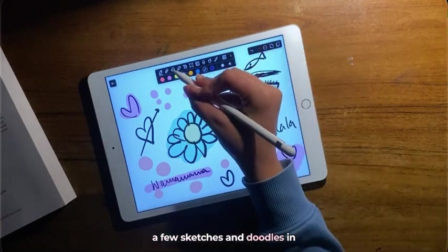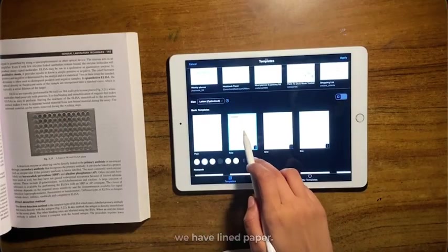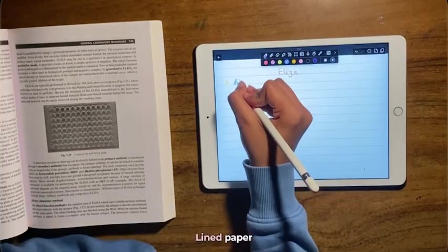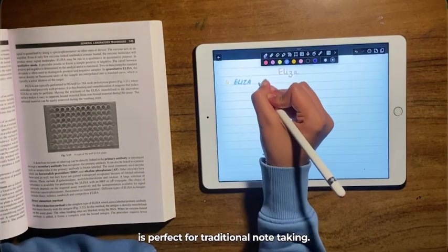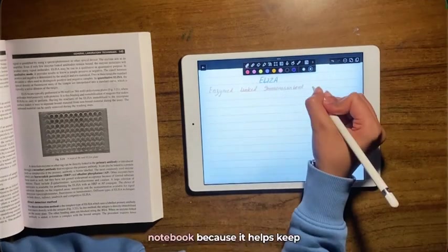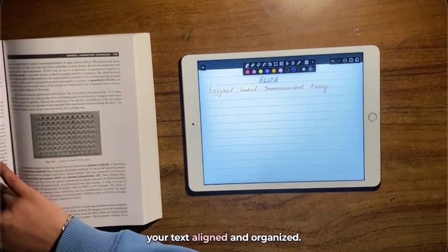Next up, we have lined paper. This is the most straightforward and familiar one. Lined paper is perfect for traditional note-taking. It's great if you're used to writing notes in a notebook because it helps keep your text aligned and organized. Whether you're writing lecture notes or jotting down quick ideas, lined paper ensures your handwriting stays neat.